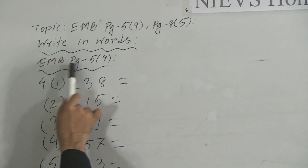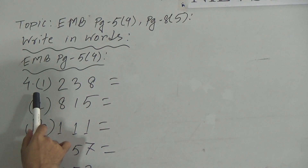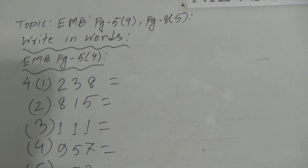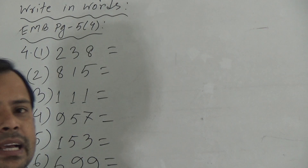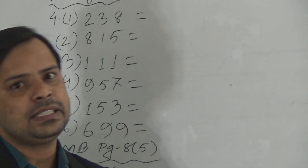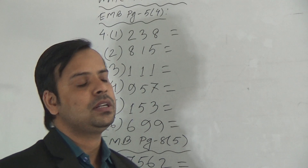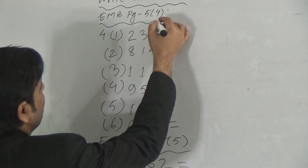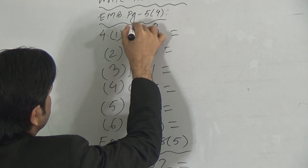Here, Elementary Mathematics Book page 5, activity 4. Six questions are given here. We have to write these numbers in words. To write a number in words, first we have to know the position of the digits of a number. The first position is 1's, then 10's, and then 100's.